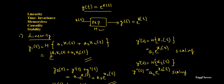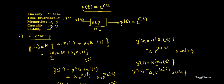To summarize all five properties of y(t) = e^x(t): the system is non-linear, time invariant, memoryless, causal, and stable.